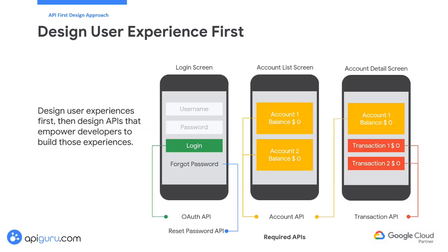Collaborating with developers and UX designers to identify necessary APIs based on a defined customer journey map can effectively create a centralized backlog of requirements. For instance, consider a basic banking application where users log in to view their accounts and transaction history. Four APIs would empower developers to build such an application: an API to authenticate the bank customer, an API to reset their password, an API to fetch and display the customer's bank accounts and balances, and an API to show customers their transaction history. By aligning API requirements with each step of the customer journey, you ensure the APIs are designed to meet the specific needs of each user interaction, creating a more seamless and practical application.